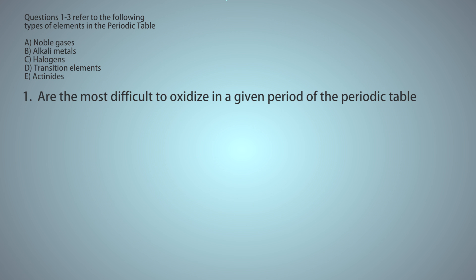Question 1: Which of the following types of elements are the most difficult to oxidize? The answer is A, the noble gases. To answer this question, you need to know what the word oxidize means. It can mean to combine with oxygen, but more generally it means an atom or molecule loses electrons, so it becomes positively charged.